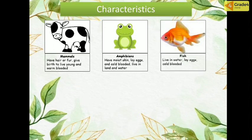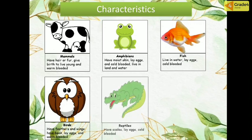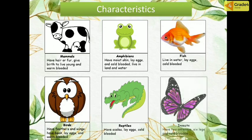The third is fish. Fish live in water, lay eggs, and are cold-blooded. The fourth is birds. Birds have feathers, wings, and a beak, lay eggs, and are warm-blooded. The fifth is reptiles. Reptiles have scales, lay eggs, and are cold-blooded. And the last is insects. Insects have two antennae, six legs, and are cold-blooded.